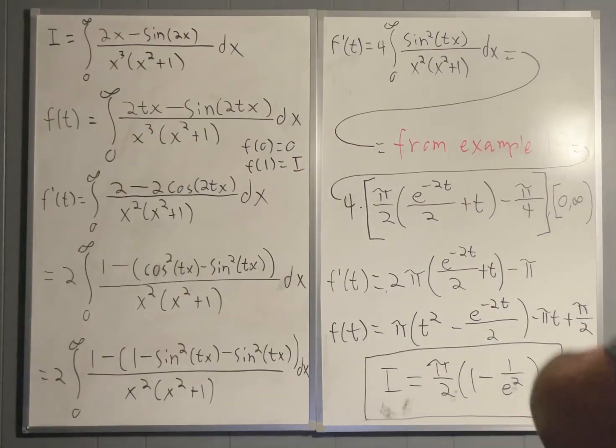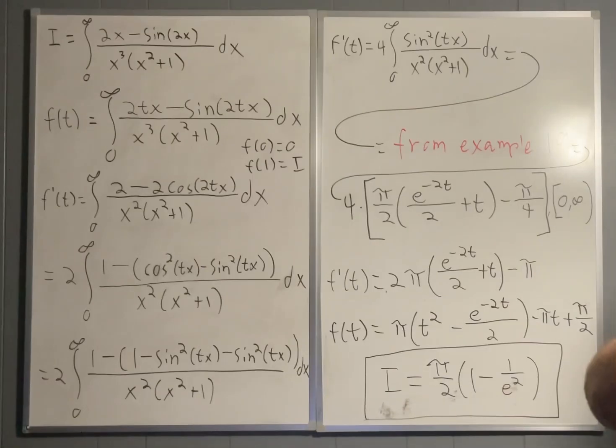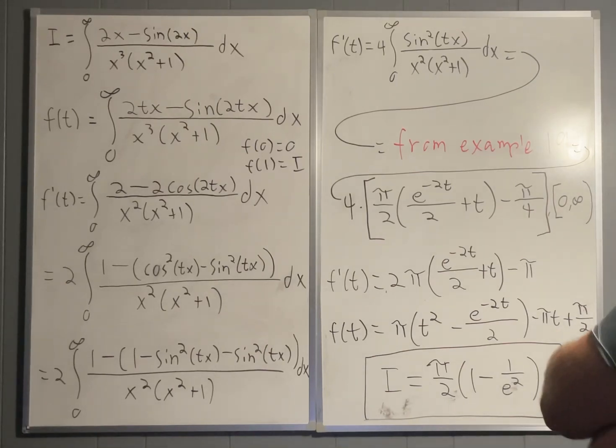So finally, we have that f prime of t is equal to 4 times the integral from 0 to infinity of sine squared tx over x squared times x squared plus 1 dx.